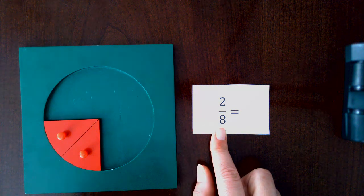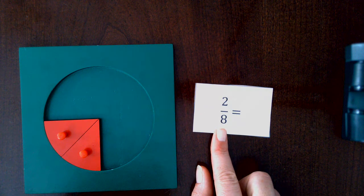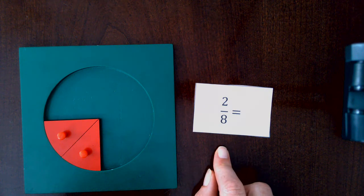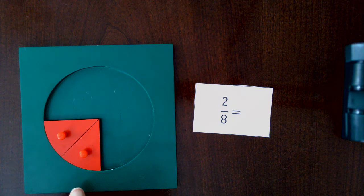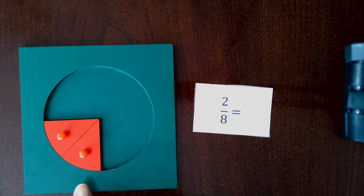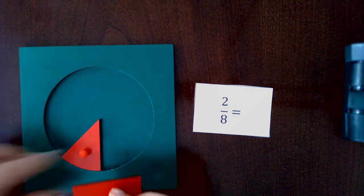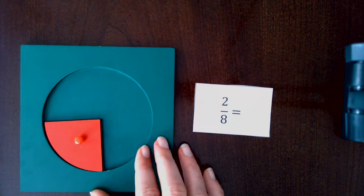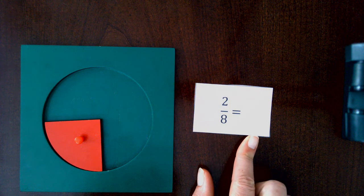And I would like to change two-eighths for another equal fraction, having as few parts as possible. What other fraction does two-eighths look like? Yes, it looks like one-fourth. Two-eighths is equal to one-fourth.